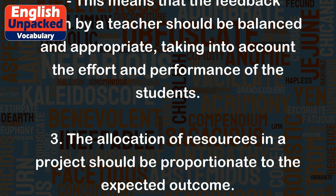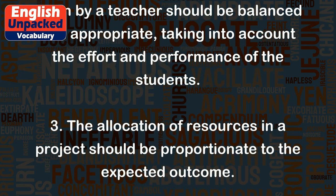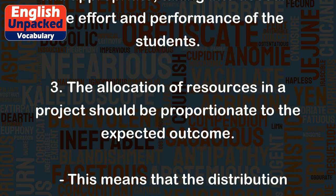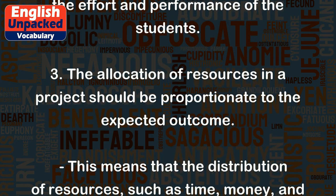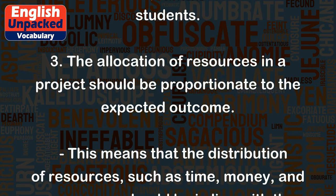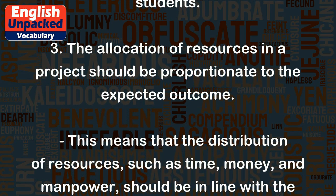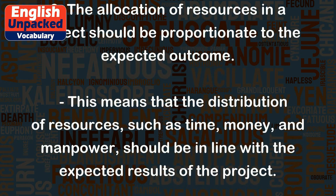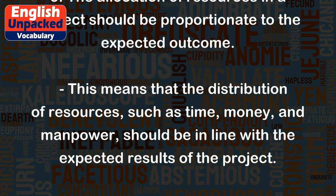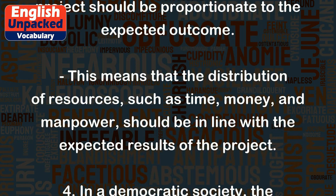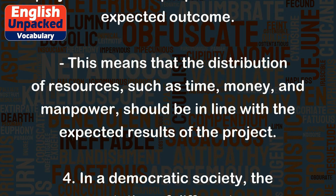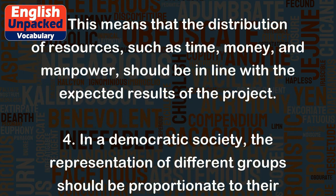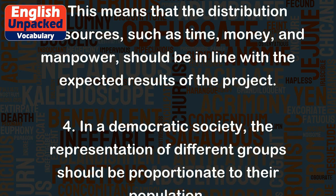Three: the allocation of resources in a project should be proportionate to the expected outcome. This means that the distribution of resources, such as time, money, and manpower, should be in line with the expected results of the project.